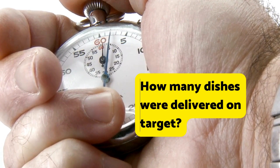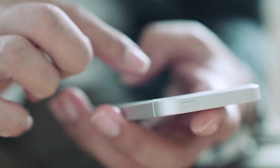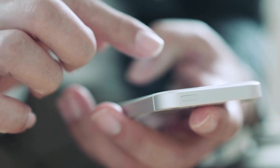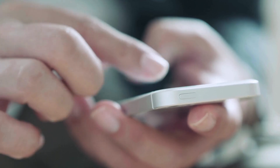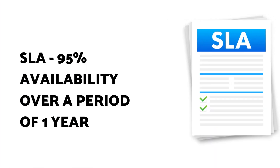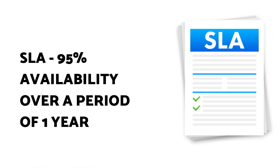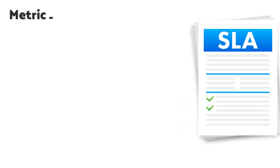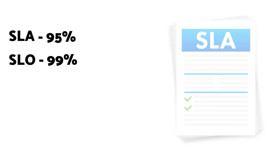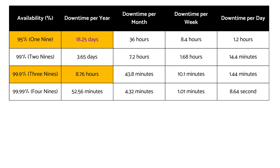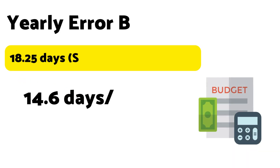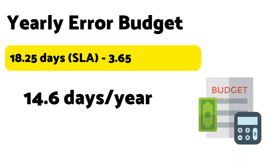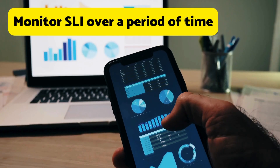Taking an example of IT services, let us assume you have a mobile application that you have committed to your customers to be available 99% of the time. To achieve this target, we have kept an SLO of 99.9%, and watching the availability matrix and calculations, we will have specific numbers. This gives you a workable error budget so that in case of any incident, we still have a defined amount of time to address it.